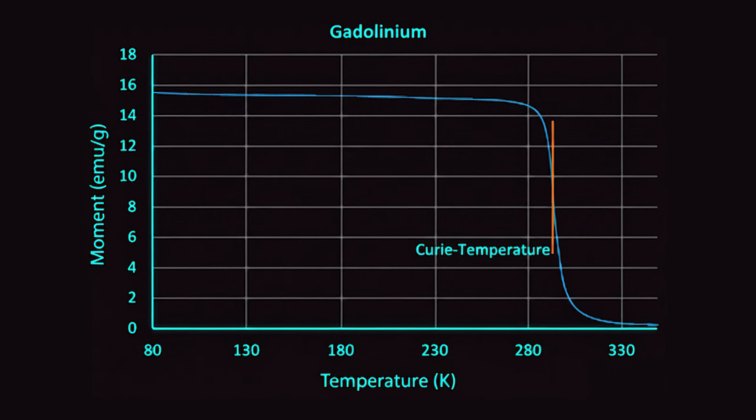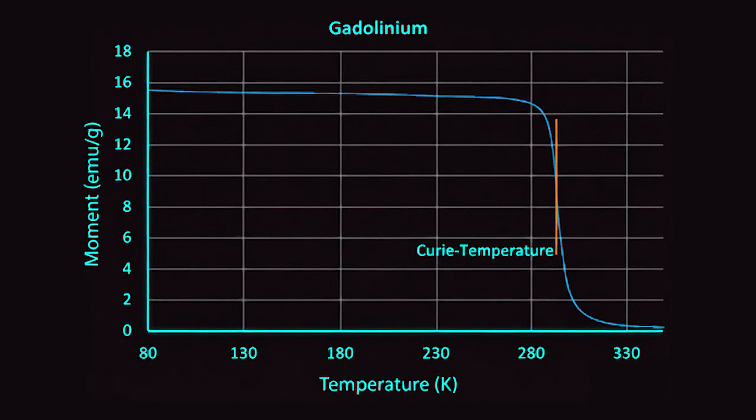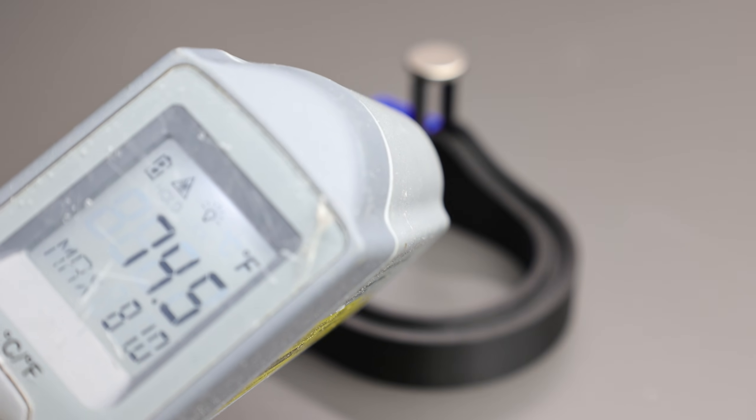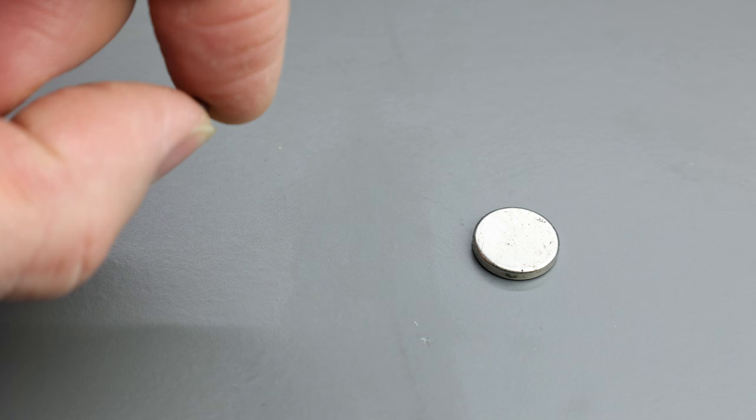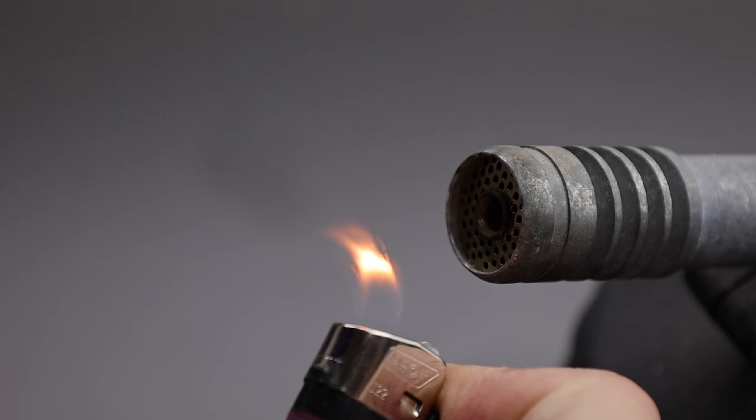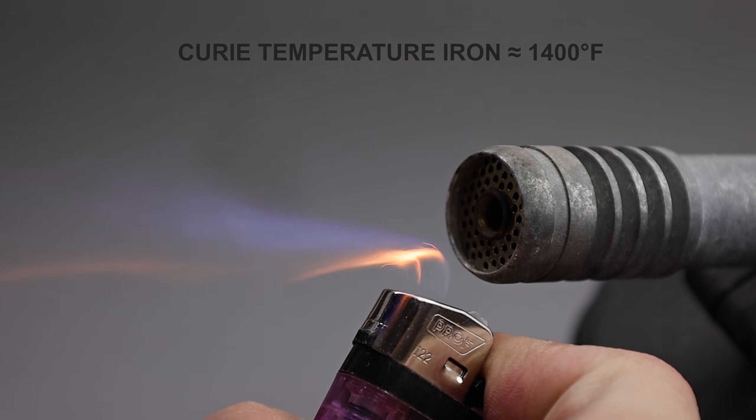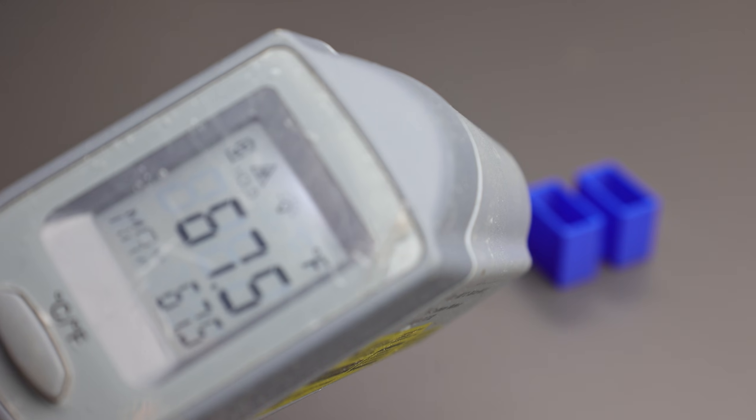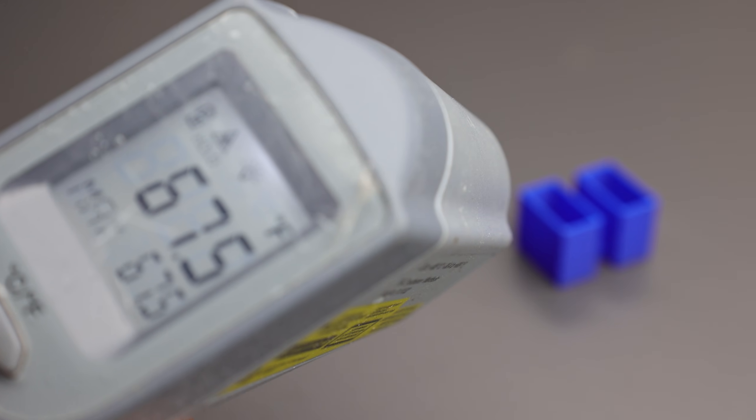Now, every magnetic material has a Curie point—the specific temperature where its atomic dipoles become so agitated by thermal energy that they lose their alignment, turning the material from ferromagnetic to paramagnetic. For iron, that happens at over 1,400 degrees Fahrenheit. But for gadolinium, that transition happens right around 70 degrees.